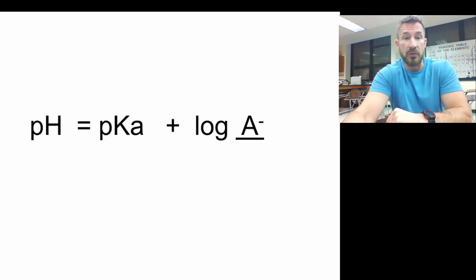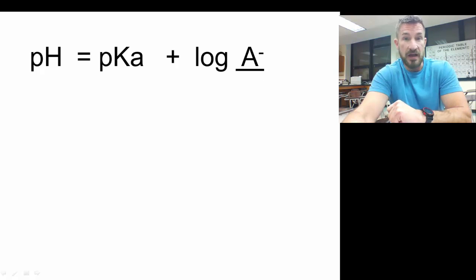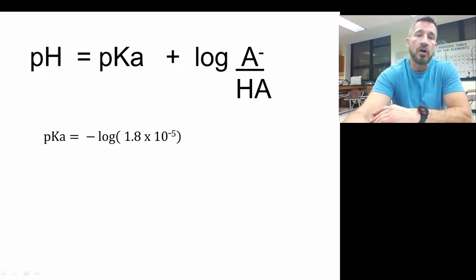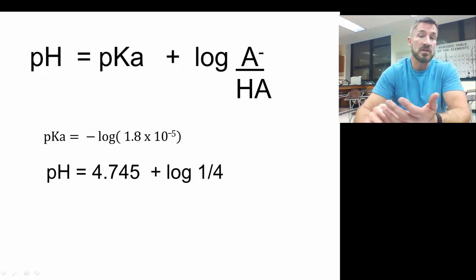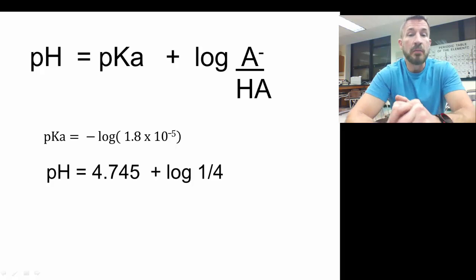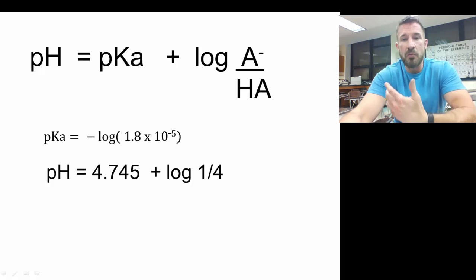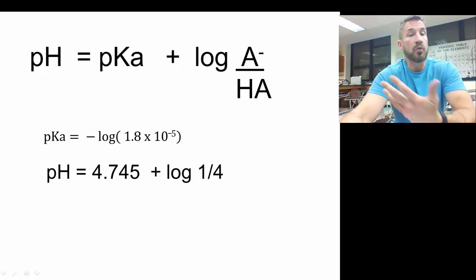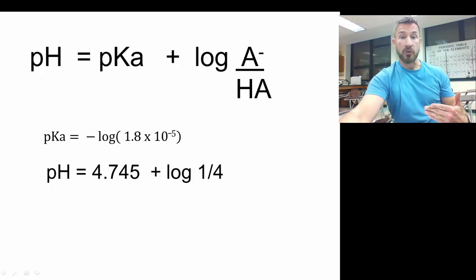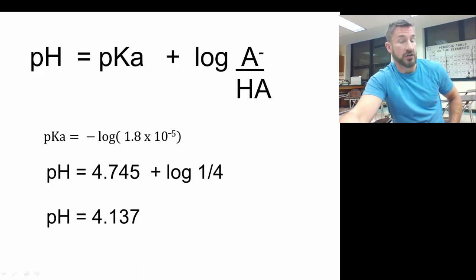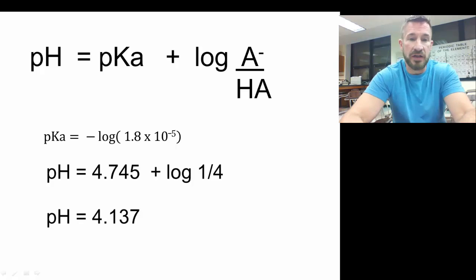From this point, we use the Henderson-Hasselbalch equation: pH = pKa + log([A⁻]/[HA]). The pKa is simply −log(Ka). So pH = 4.745 + log(1/4), where 4.745 comes from −log(1.8 × 10⁻⁵). Since we have more HA than A⁻, we expect a lower pH than the pKa. Solving this out, the pH is 4.137. So after adding 10 milliliters of sodium hydroxide, the final answer is pH 4.137.